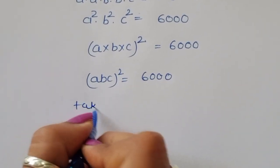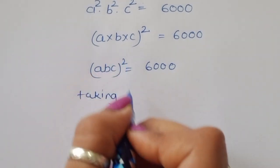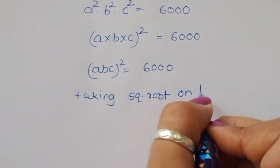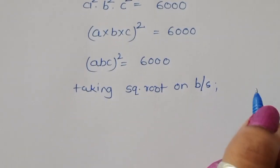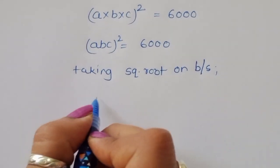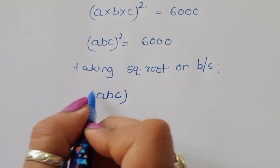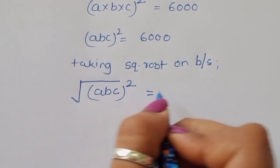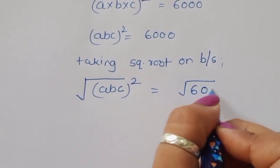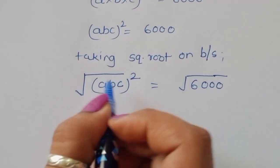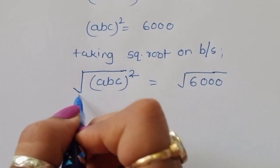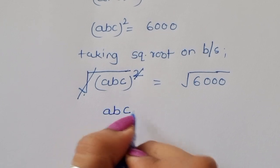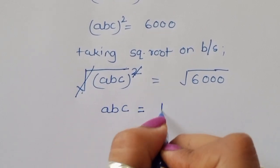Now we need to remove the square, so we take the square root on both sides. The square root of (ABC)² gives us ABC, so the value of ABC is equal to the square root of 6000.